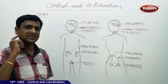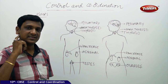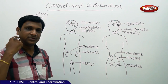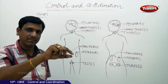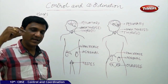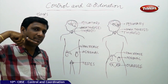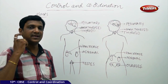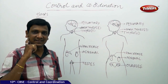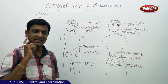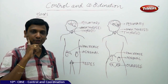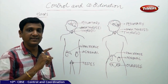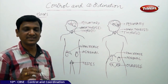Salivary glands are here — saliva is secreted and from here to the mouth there is a pipe. That means the gland secretes through a pipe into the mouth, so this is a gland with a duct. It does not secrete hormones. Hormones are secreted by ductless glands.